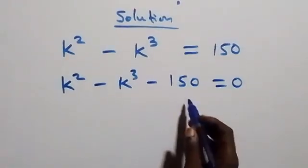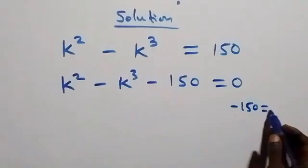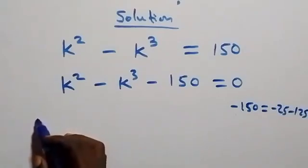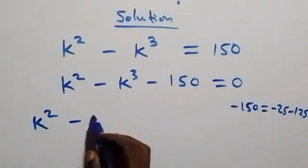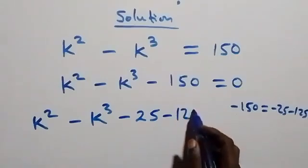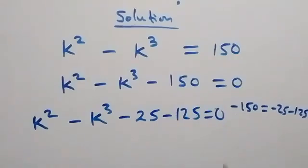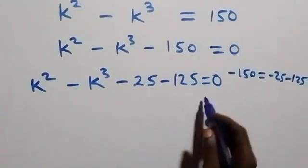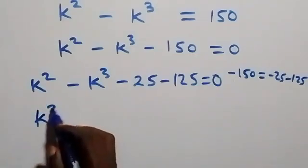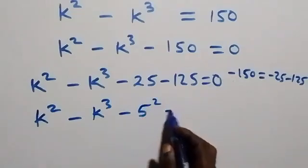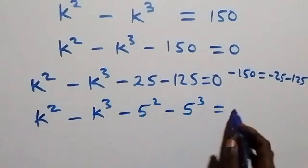From here we can write minus 150 as minus 25 minus 125. So we can now write this as k squared minus k cubed, then minus 25 minus 125, equals zero. We can also write 25 as 5 squared and 125 as 5 cubed, giving us k squared minus k cubed minus 5 squared minus 5 cubed equals zero.